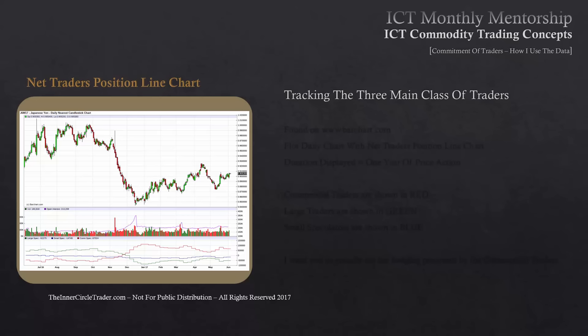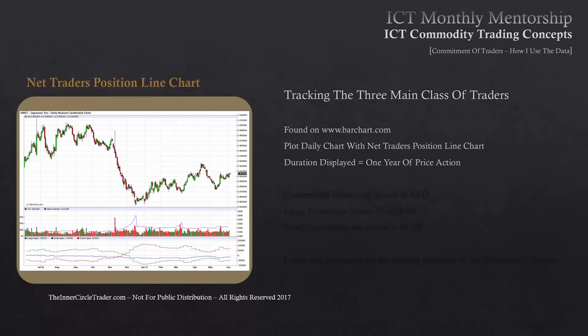The net trade position line chart lets us track the three main classes of traders. You would find this on www.barchart.com. What you're going to do is plot a daily chart and add the net traders position line chart indicator at the bottom. The duration you want to display is at least one year's worth of price action. On barchart.com, commercial traders are typically shown as a red line, large traders as a green line, and small speculators as a blue line.